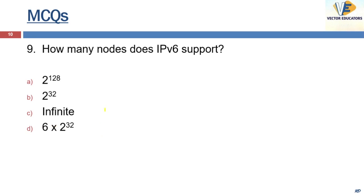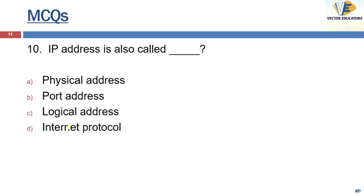Next question: how many nodes does IPv6 support? It supports 2 raised to 128 nodes. IPv6 stands for Internet Protocol Version 6 — it is a 128-bit address. An IPv6 address is also called a logical address.